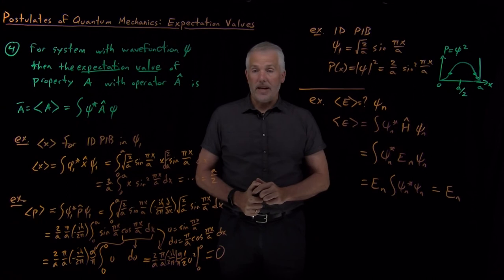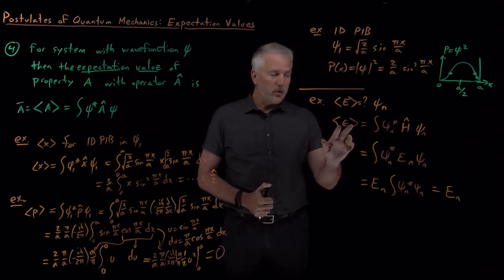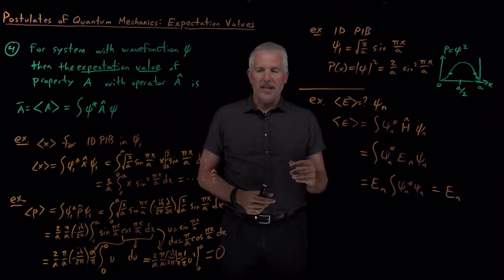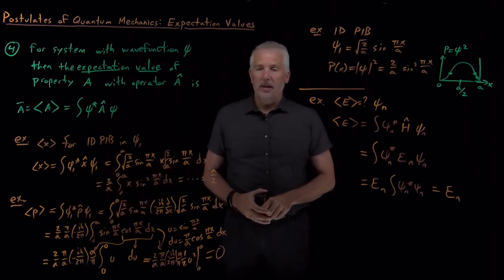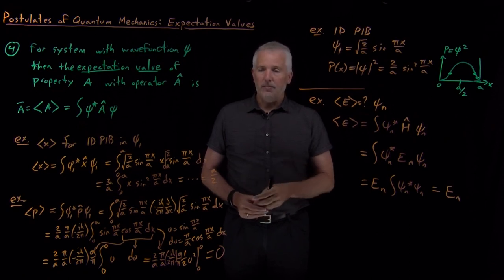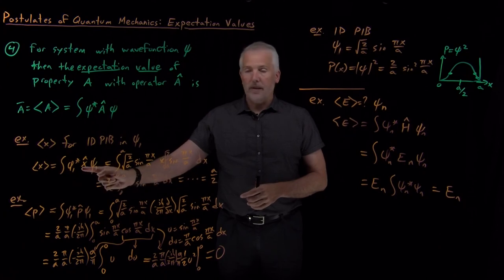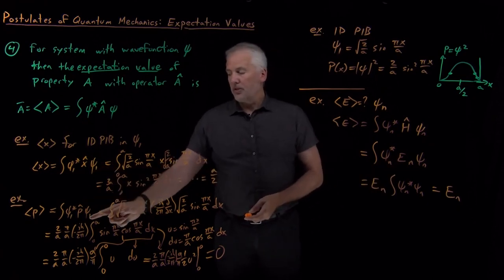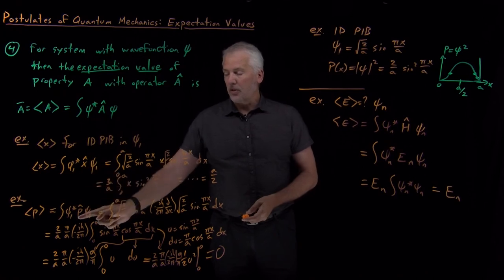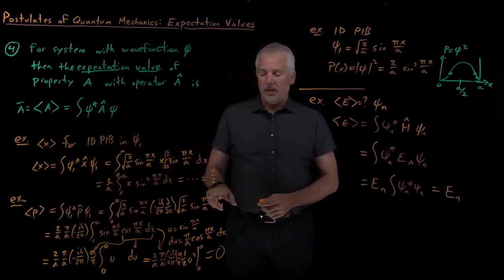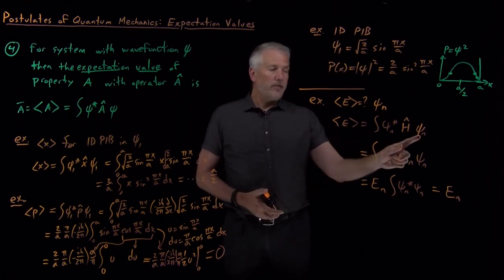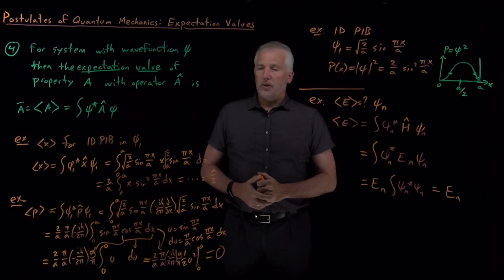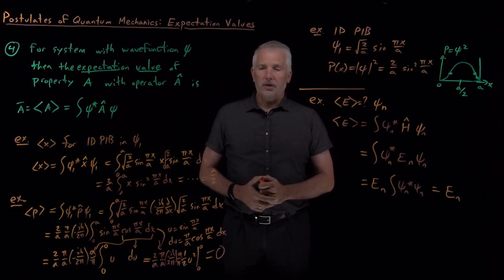The only value the energy is allowed to have is the energy of that wave function, so the average value is also that exact same value. This is true not just for energy, but for any property: if the wave function is an eigenfunction of the operator you're asking about, the only possible measured value is that particular eigenvalue. Since the particle-in-a-box wave functions are not eigenfunctions of the position or momentum operators, we can only predict average values for those. But for energy, the wave functions are eigenfunctions of the Hamiltonian, so the energy always has that exact value. That's the fourth postulate — one more postulate remains, covered in the next video.